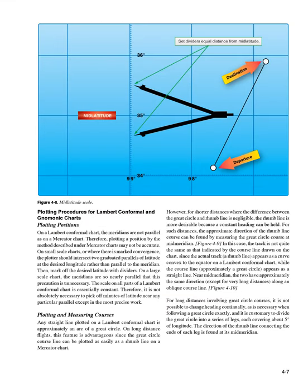Plotting procedures for Lambert conformal charts: the meridians are not parallel as on a Mercator chart. Therefore, plotting a position by the Mercator method may not be accurate. On small-scale charts or where there is marked convergence, the plotter should intersect two graduated parallels of latitude at the desired longitude rather than parallel to the meridian. Then mark off the desired latitude with dividers. On a large-scale chart, the meridians are so nearly parallel that this precaution is unnecessary.